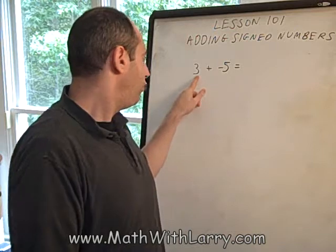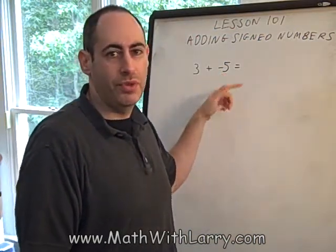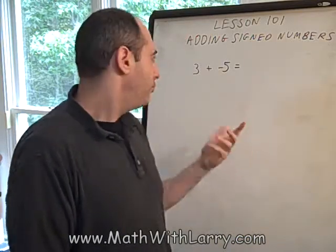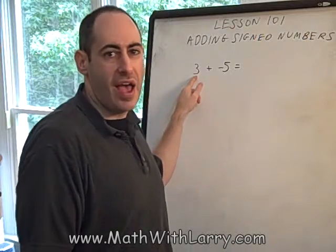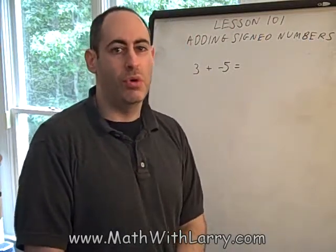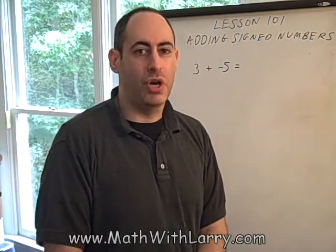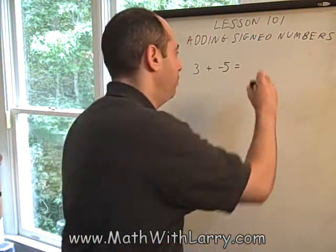So the situation is, I have three dollars, but I owe you five dollars. We know from experience what that means. If I want to pay you back your money, I can pay you back the three dollars that I have, but think about the situation. I'll still owe you money, won't I? I'll still owe you two dollars. And the way we'll show that is by writing negative two. The negative meaning, I owe you money. I still owe you money.